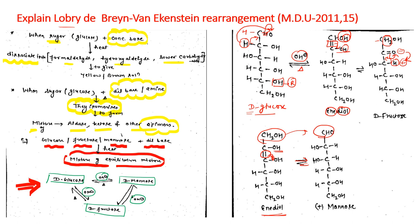In the Lobry de Bruyn case, repeated enediol formation allows one form to easily convert into another. Remember specifically: D-glucose reacted with base and heated gives D-mannose; reacted again with base and heated gives D-fructose. This equilibrium continues, with all three isomers interconverting when dilute base is used. This reaction is the Lobry de Bruyn-van Ekenstein rearrangement, asked in MDU 2011 and 2015.